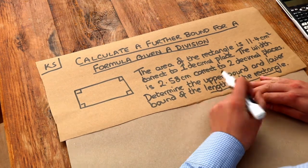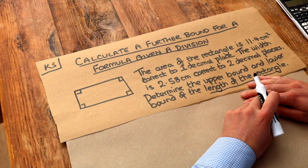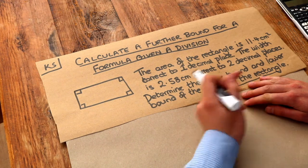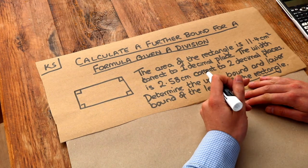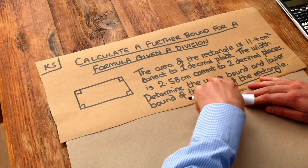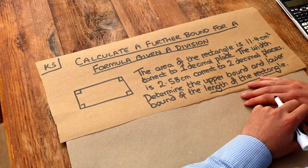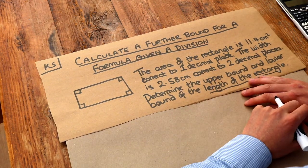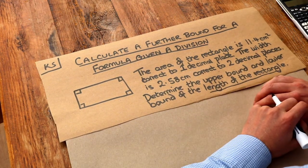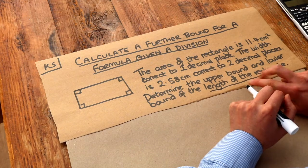So we've got this problem here. The area of a rectangle is 11.4 cm², correct to one decimal place. The width is 2.58 cm of this rectangle, correct to two decimal places. Determine the upper bound and lower bound of the length of the rectangle.